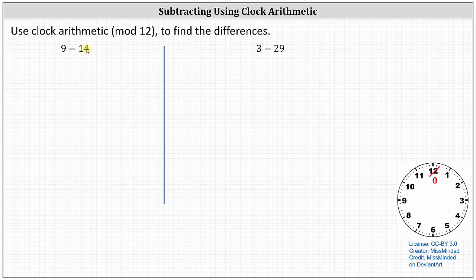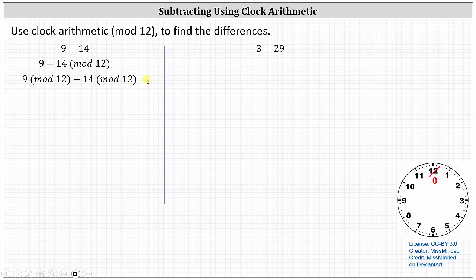First we have 9 minus 14, which can be written as (9 minus 14) mod 12, where the mod 12 applies to both the 9 and the 14, or we can write 9 mod 12 minus 14 mod 12. In terms of clock arithmetic, this is equivalent to starting with the hour hand pointing at 9 for 9 o'clock and going back 14 hours. Using mod 12 arithmetic, we can either find the difference first and then evaluate mod 12, or evaluate 14 mod 12 first and then find the difference.